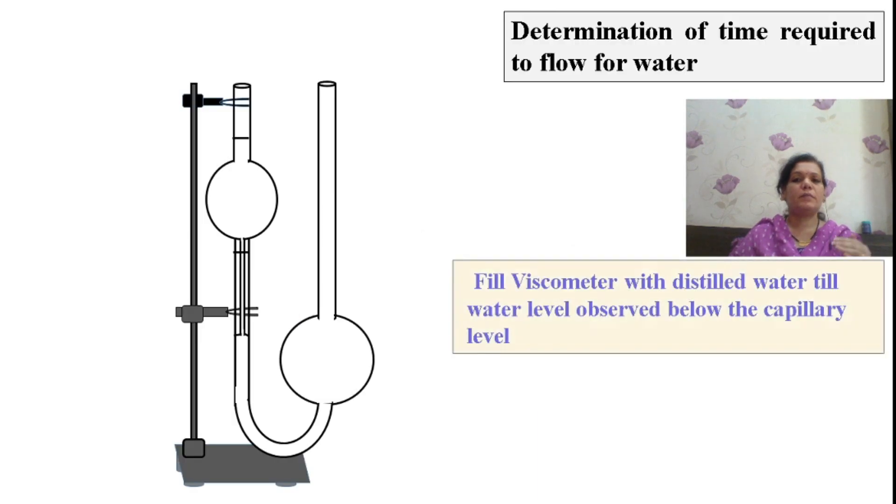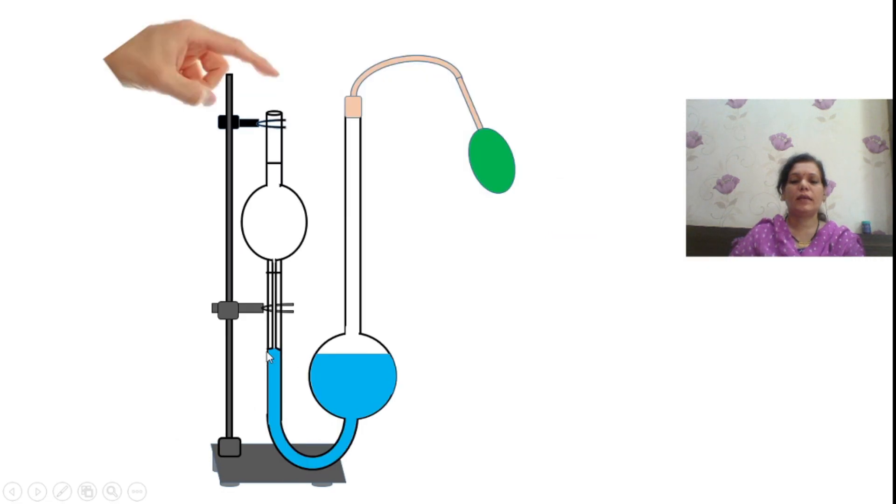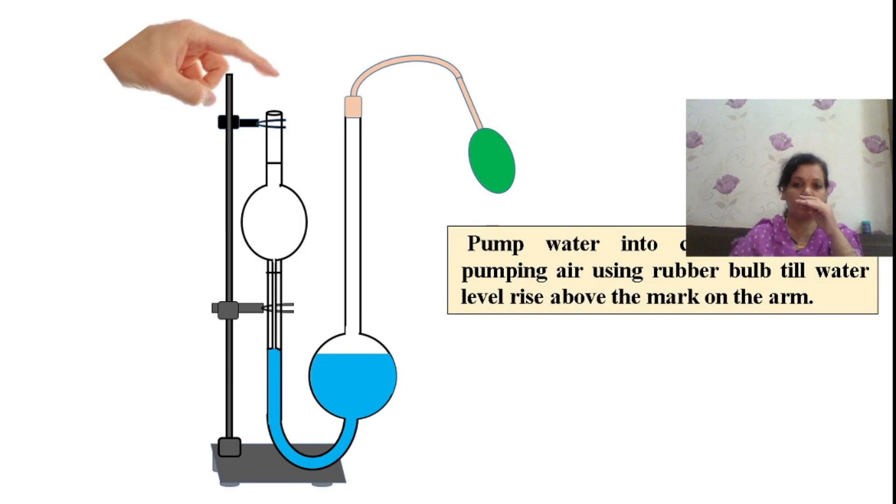Then determine the time of flow of water. Pass the water from this side. Take care that you are not filling much amount, only 20 ml and not moving above this capillary level. We will carry out the experiment with the help of pumping this rubber bulb. We pump the air through this rubber bulb. As the air moves inside, the liquid will transfer from this level, it will move ahead and go up to this mark.